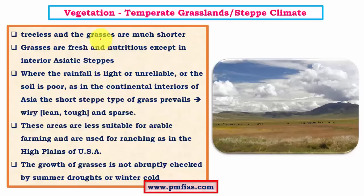In steppe the grasses are fresh and nutritious and support good pasturing lands. However, in certain Asiatic steppe regions deep within Asia the soil is very poor and rainfall is very low, resulting in wiry, coarse, sparse grasses that are not nutritious and not suitable for pasturing. This is an exception; other steppe regions are very good for pasturing. In these less suitable areas, ranching is undertaken using hybrid grass varieties called alfalfa, which replaces the poor grass with nutritious alfalfa, enabling ranching in otherwise non-arable lands.